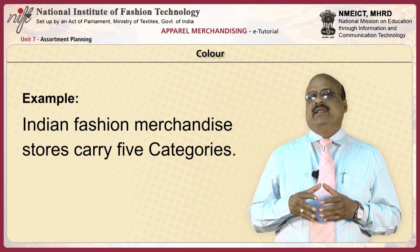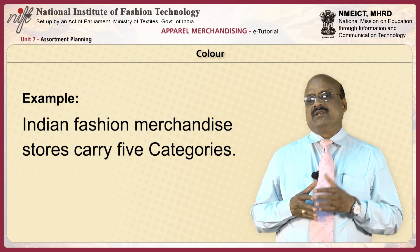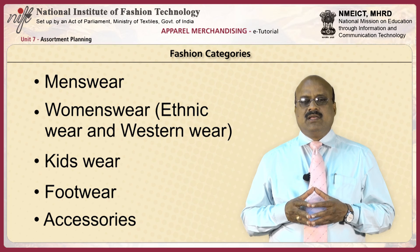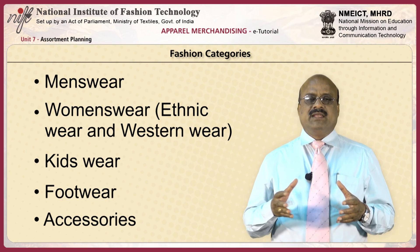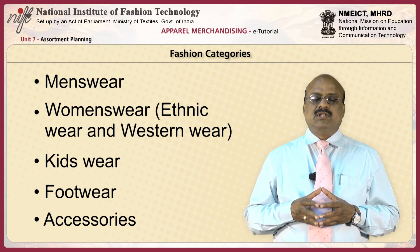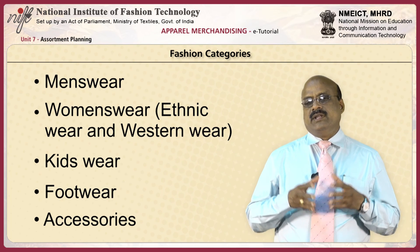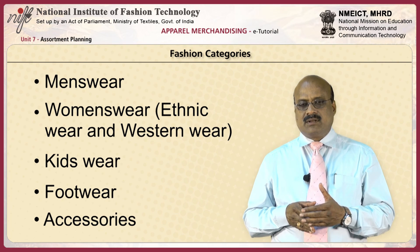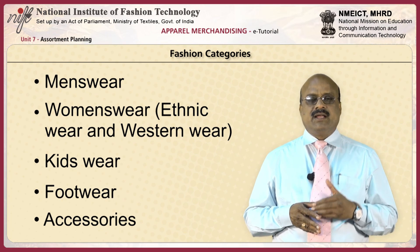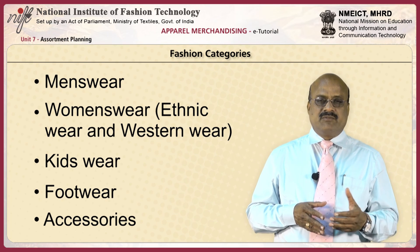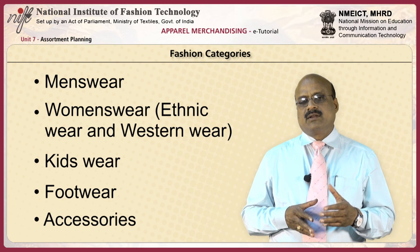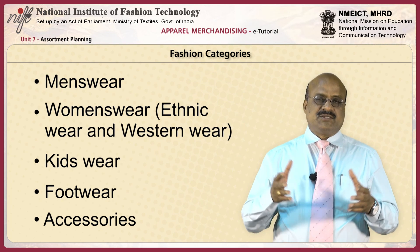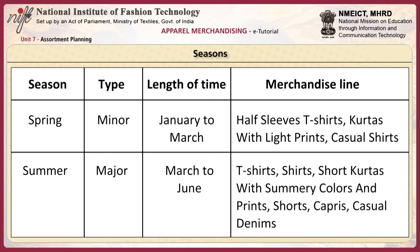For example, Indian fashion merchandise stores carry five major categories: men's wear, women's wear (which includes ethnic and western wear), kids' wear, footwear, and accessories. As an Indian retailer, the following seasons are observed: for spring (a minor season from January to March), the merchandise line includes half-sleeve t-shirts, kurthas with light prints, and casual shirts.